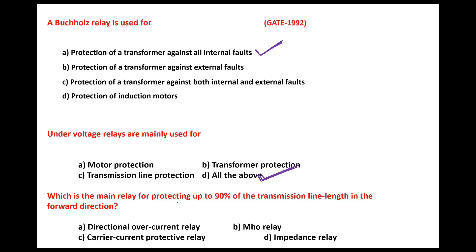Which is the main relay for protecting 90% of transmission line length in the forward direction? Out of these relays, Mho relay is the relay that protects 90% of the transmission line in the forward direction, because it occupies the least space and can handle power swings very well.